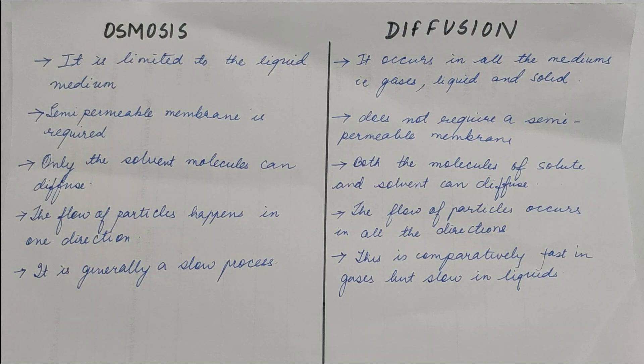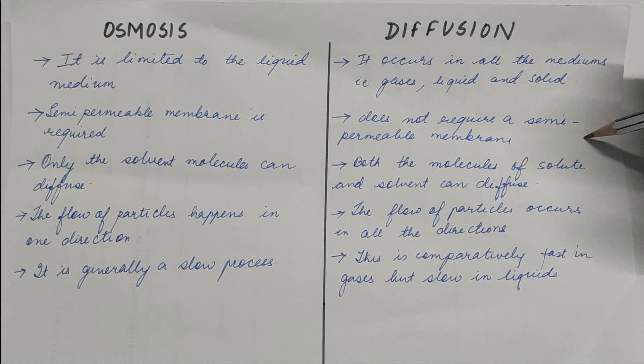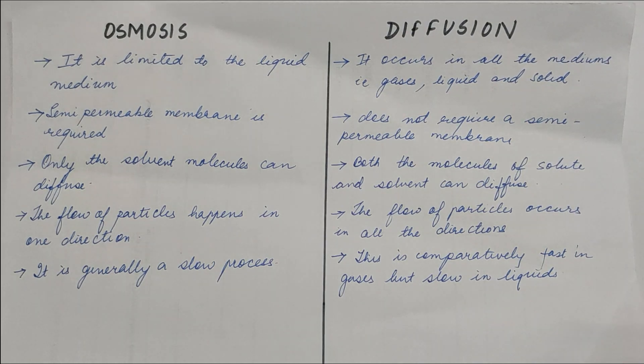The semi-permeable membrane is needed in osmosis whereas we don't need a semi-permeable membrane in diffusion. Only the solvent molecules can diffuse in osmosis, but the molecules of solute and solvent both can dissolve and diffuse in diffusion. The flow of particles happens in one direction in osmosis whereas the flow of particles occur in all the directions.